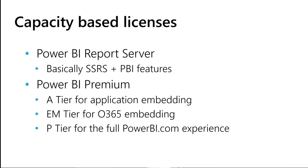The other capacity-based option is Power BI Premium. There's often confusion here because when people say Power BI Premium they're usually talking about the P-level SKU, but there are three SKUs available. There's the A-tier for application embedding — specifically for independent software vendors making software for other people. It's provisioned dynamically in Azure and is not permitted for internal use. Next is the EM-tier for Office 365 embedding, ideal if you want to put reports in Teams or SharePoint. And finally the P-tier, which is for the full Power BI.com experience.